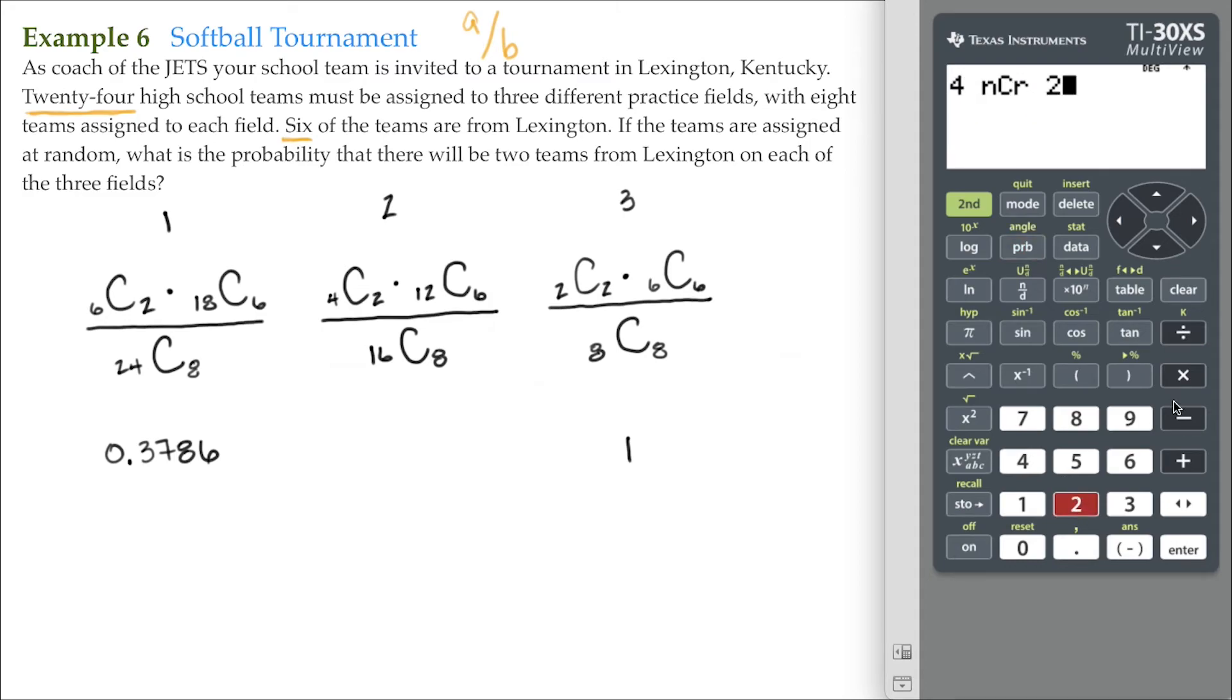Four choose two, times 12 choose six, and we'll divide that by 16 choose eight. That's 0.4308.